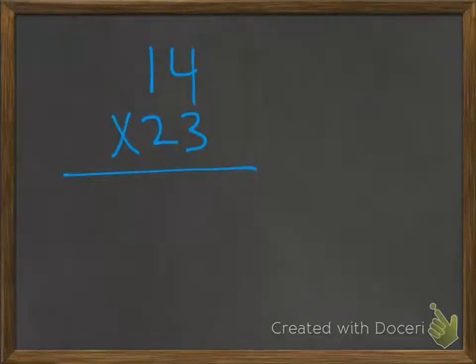We can use the standard algorithm. We can do 4 times 3, which is 12. And then 3 times, not 1, but really it's 10. So you get 30.